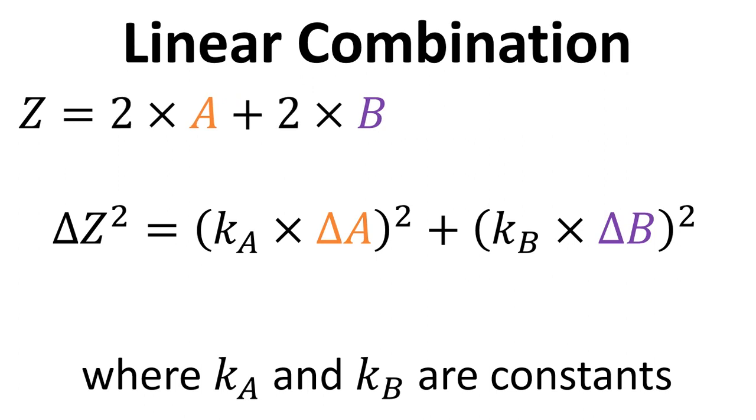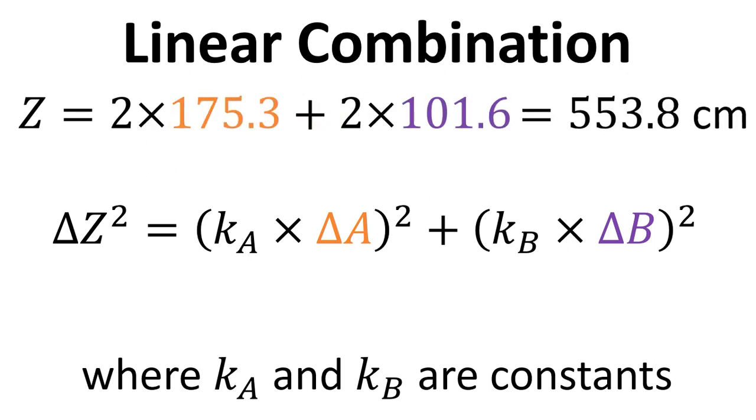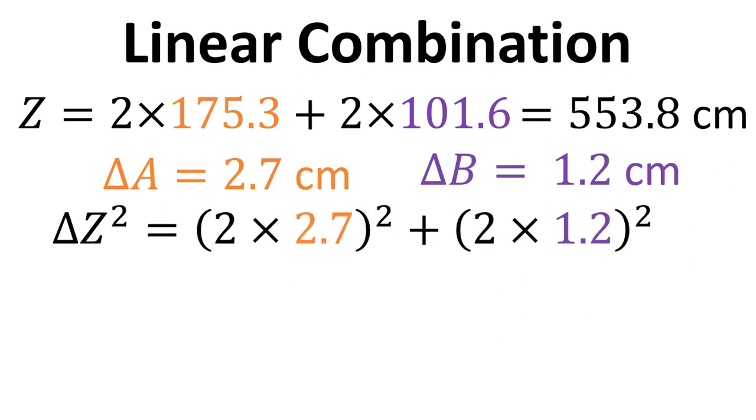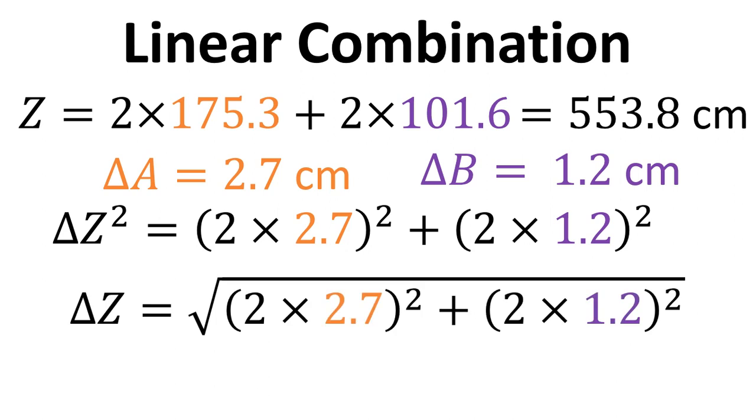And we've put the numbers in. It's 2 this time for the constants. Put the values in, we can get the perimeter. We know delta A and delta B, so we can put those in with the correct multipliers, which is 2 in this case. Rearrange, and then we can work out the value for delta Z.